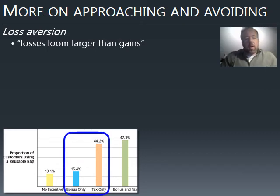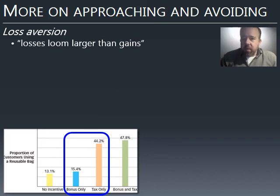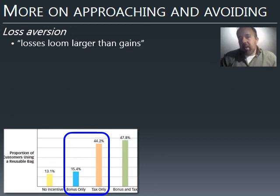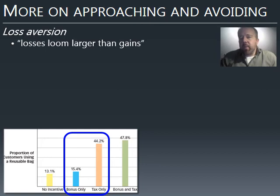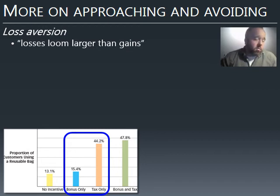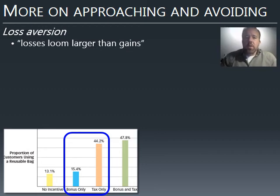A study looking at the use of reusable grocery bags found that people offered a $0.05 bonus for bringing their own bags versus a $0.05 penalty for not bringing them showed very different behavior. You'd think $0.05 gained versus $0.05 lost wouldn't make a big difference, but it did. When there was a $0.05 penalty for not bringing your own bag, almost half the people started using reusable bags, whereas with the $0.05 bonus, only about 15% did. Losses have a bigger psychological impact.